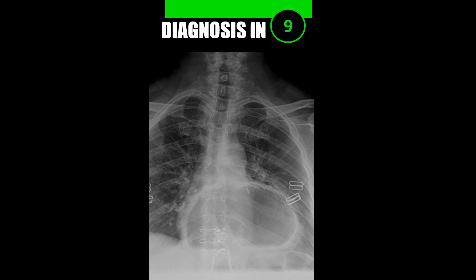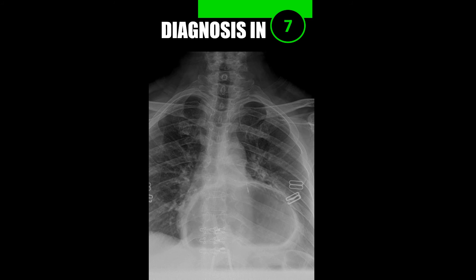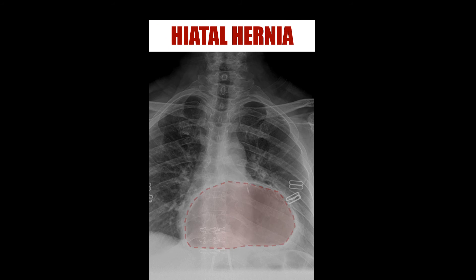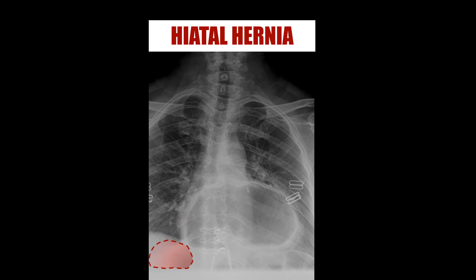Case number eight: this is a large midline hiatal hernia. The normal gastric air is under the left hemidiaphragm, but in this case you can see it overlying the heart. Compare that to where the normal gastric air bubble should be.